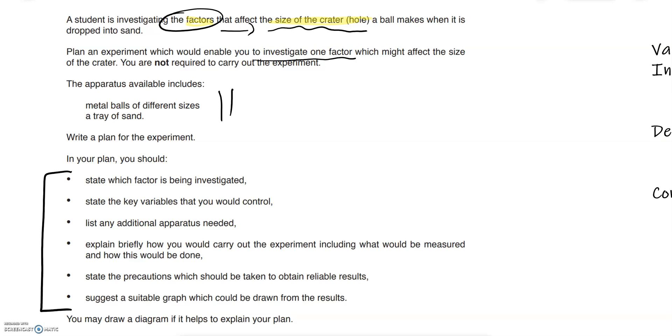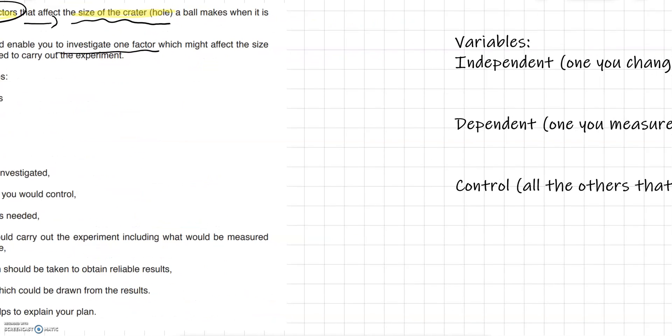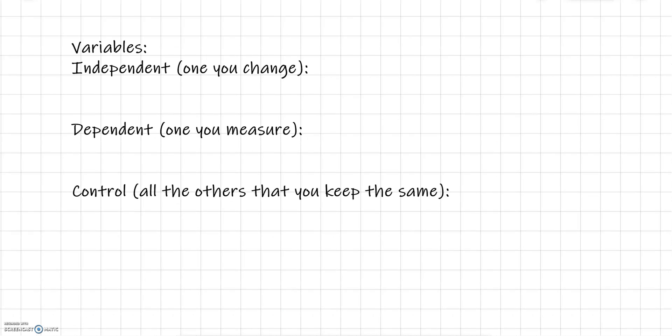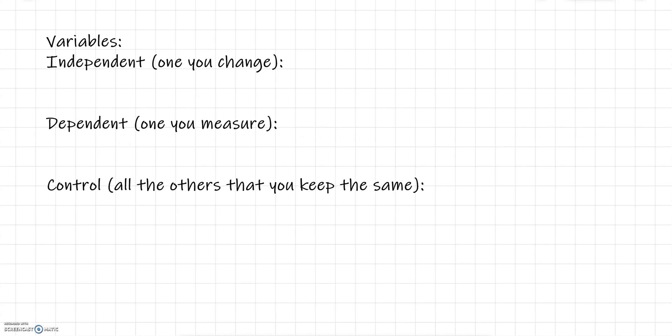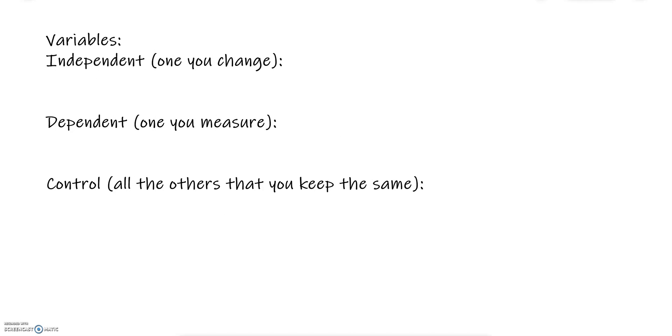Now first things first, I'd always suggest writing down the different variables in the same format every time which I've got here. The variables: independent variable which is the one you change, dependent variable the one you measure, and everything else has to go in the control variable box here.